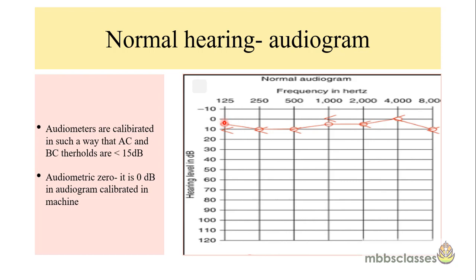Let us see an audiogram of normal hearing. Audiometers are calibrated such that the AC and BC thresholds are less than 15 decibels for normal hearing. If we trace the air conduction curve in circles, the threshold is within the 15 dB range, and the bone conduction in arrows is also less than 15 dB. This is an audiogram of normal hearing.